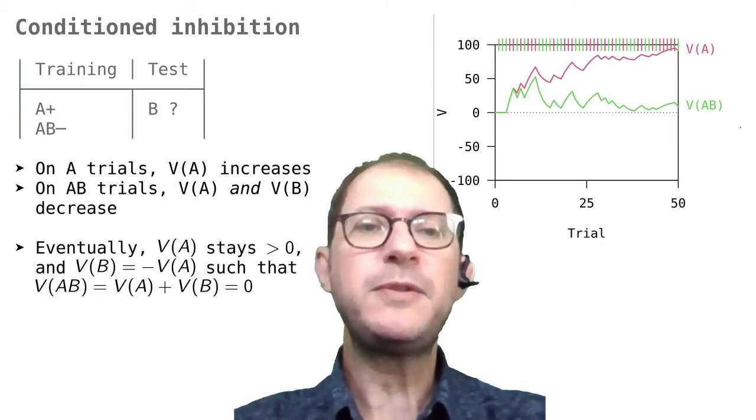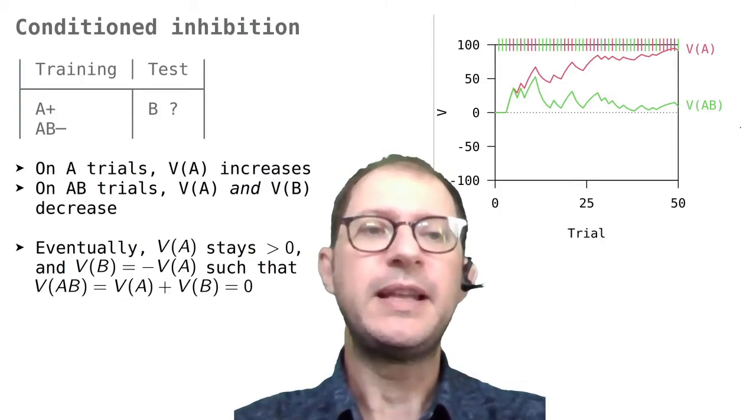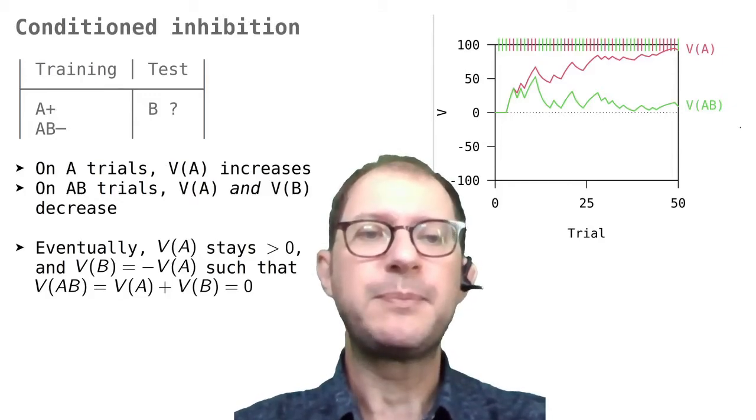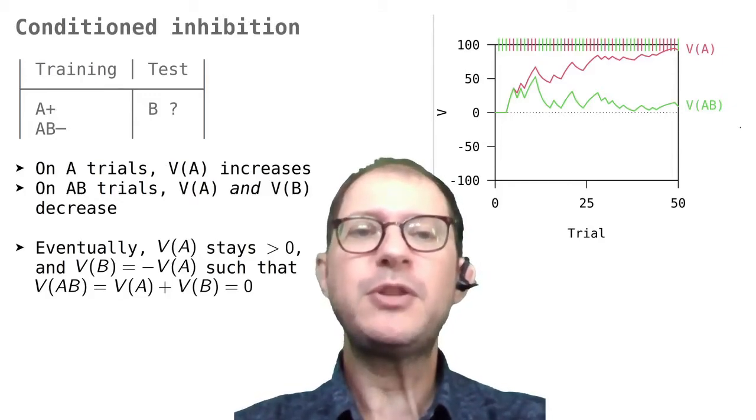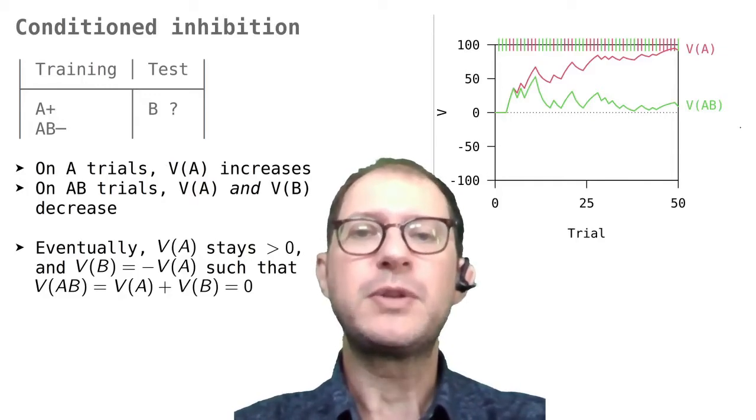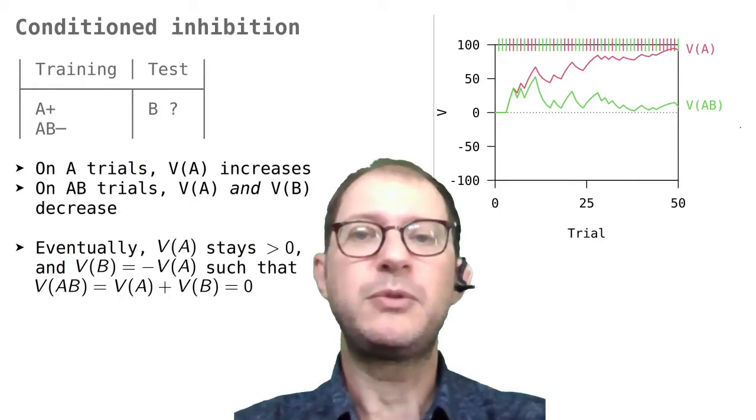But we also see that over time, the two lines separate, and at the end, RW learns to respond to A and not to respond to B. We expect this because, as I mentioned earlier, RW learns to correct all errors, and we're asking it to respond to A and not to respond to A and B together.